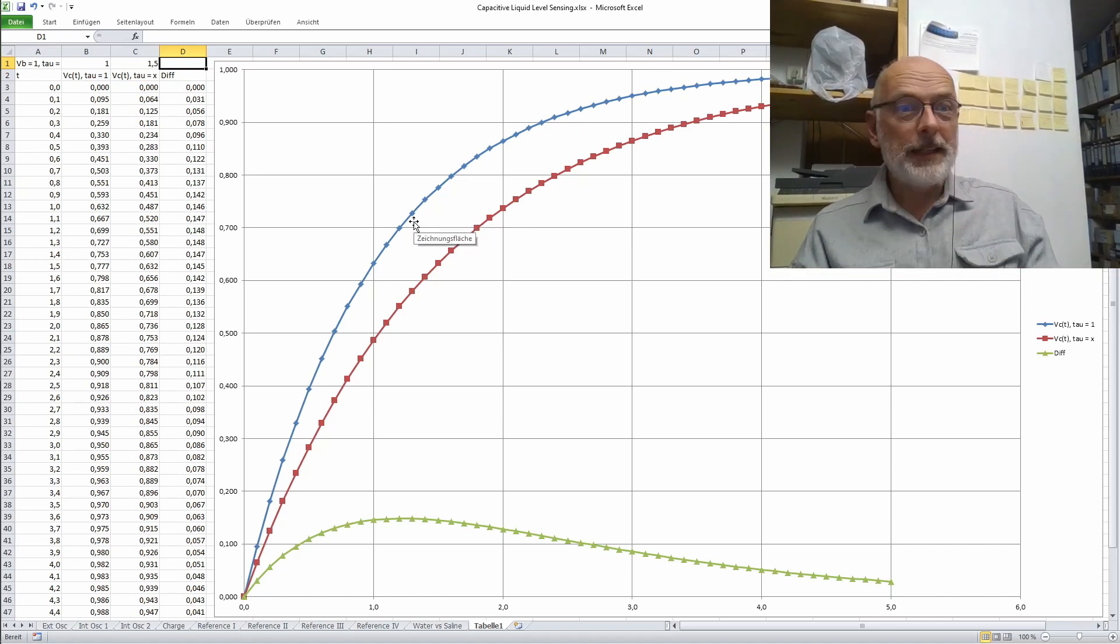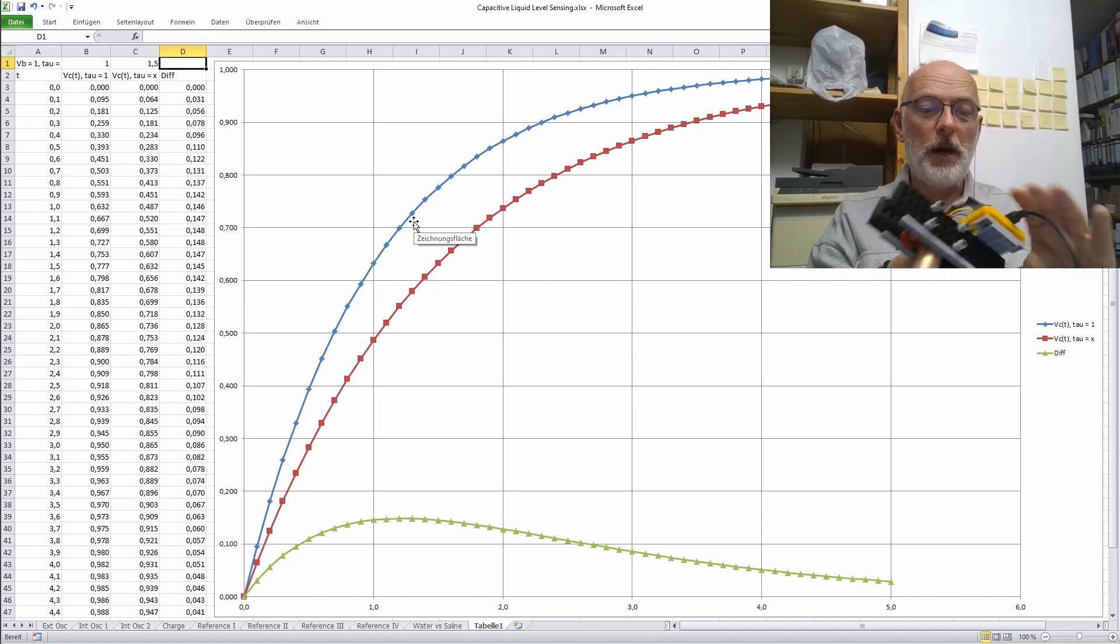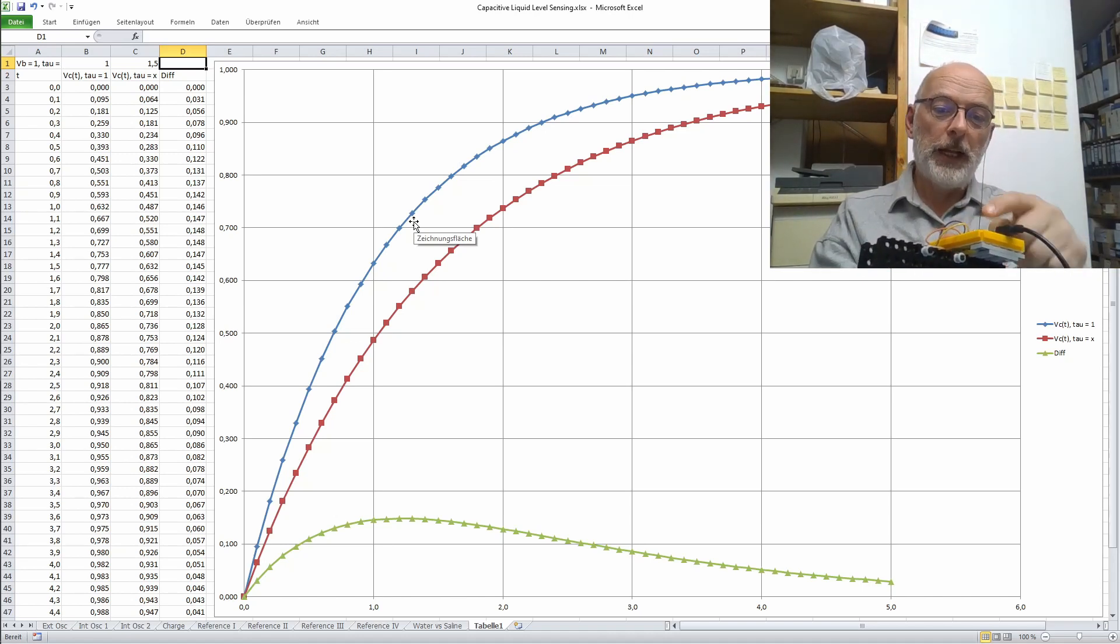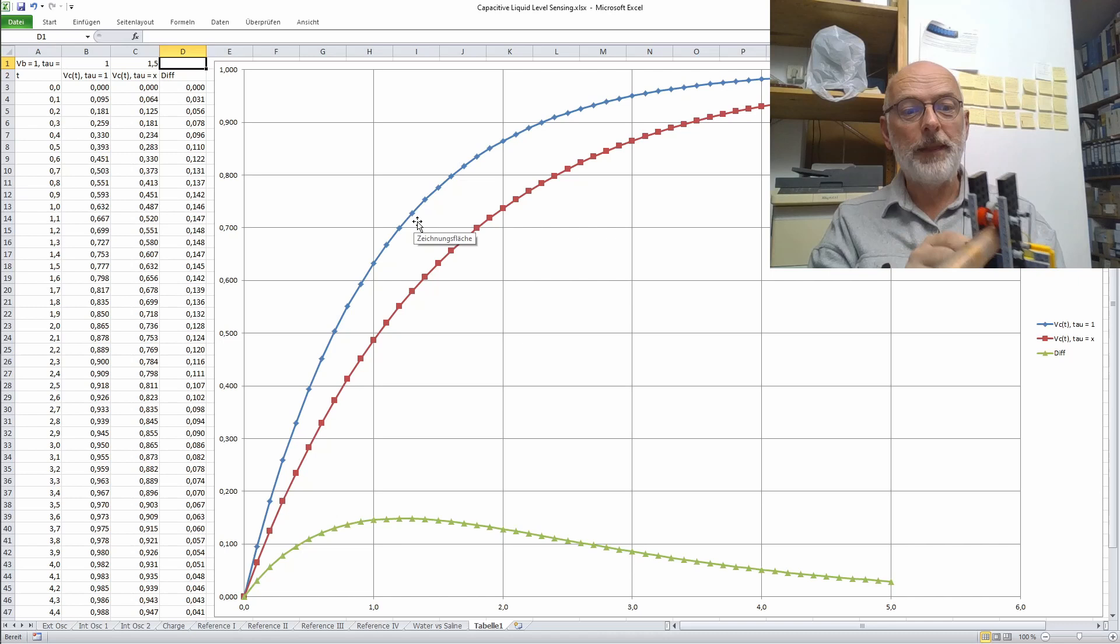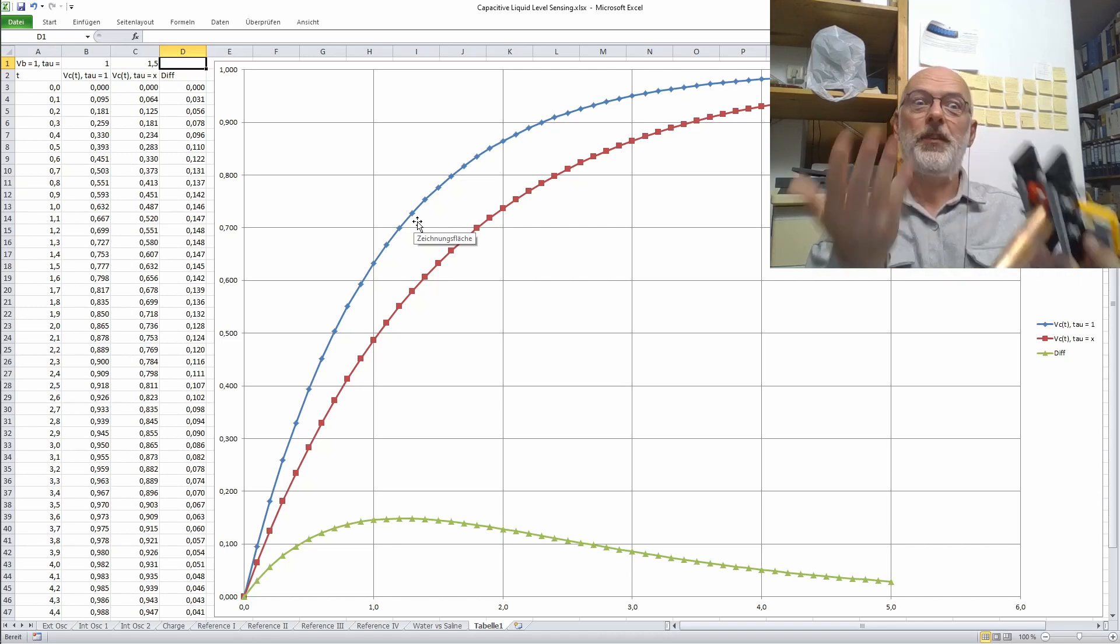Of course, if you have a sensor with another dry capacitance to wet capacitance ratio, let's say 1 to 1.5, the optimum time for taking your measurement shifts and therefore the optimum charge level shifts too, about 70-75% in that case. And keeping all that in mind, you start fiddling around and optimize your resistor values and charge time to get the most out of this setup.